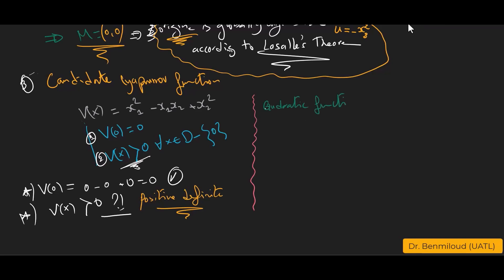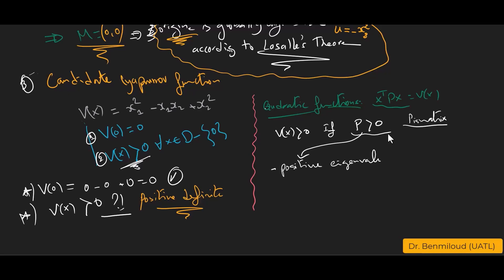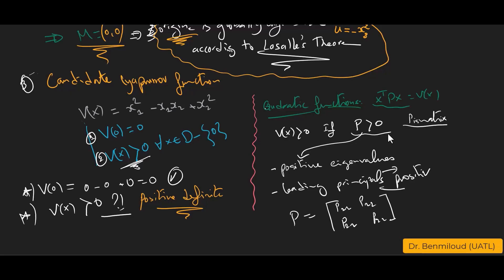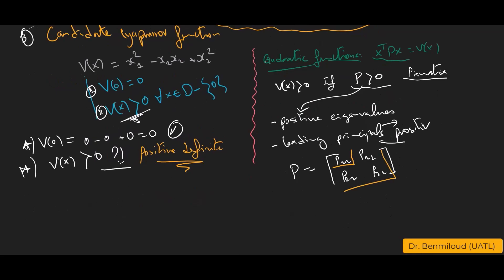This can be proven using two methods. The first is to prove all eigenvalues of P are positive. The second method is to prove all leading principal minors are positive. For our 2×2 matrix P, the leading principal minors are p₁₁ and the determinant. Writing v(x) = x₁² - x₁x₂ + x₂² in quadratic form, p₁₁ = 1, p₂₂ = 1, and the off-diagonal elements are -½.